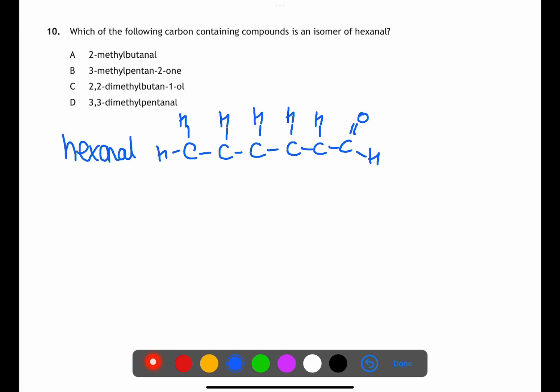We therefore have a formula for hexanol of C6H12O. The best place to start with these sorts of questions is to have a look at the formulas. Check for the number of carbons first and eliminate any which do not have six carbons.